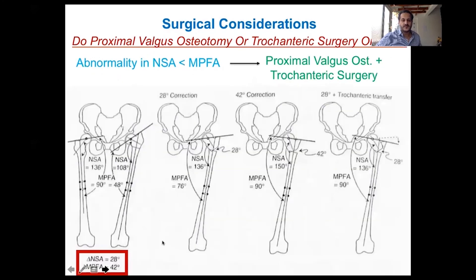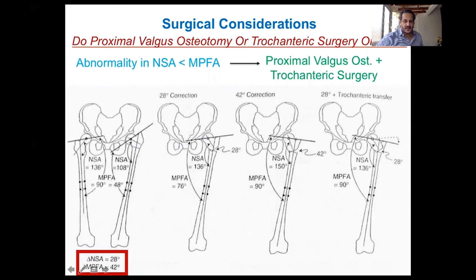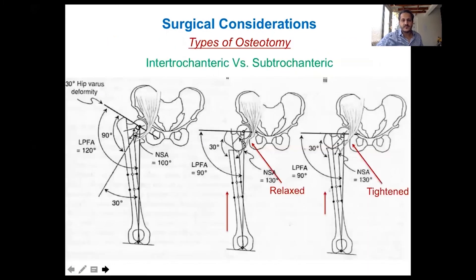But if the decrease in the neck shaft angle is less than the decrease in the medial proximal femoral angle from normal, simply correcting the neck shaft angle will still leave the greater trochanter elevated. Overcorrecting the neck shaft angle to bring the trochanter down will produce coxa valga. In this case, it is better to combine the valgus osteotomy with distal trochanteric transfer. Regarding osteotomy level: subtrochanteric osteotomy relaxes the iliopsoas tendon, while trochanteric osteotomy tightens it — an important consideration when there is a flexion deformity.